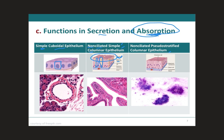Last, we have the non-ciliated pseudostratified columnar epithelium. It appears to have several cell layers because the nuclei of these cells are at various levels. Even though all the cells are attached to the basement membrane in a single layer, some cells do not extend to the apical surface, giving a false impression of a multi-layered tissue. Remember that pseudostratified means false stratified, so it contains only one cell layer. The non-ciliated type lines the epididymis, large ducts of many glands such as the parotid glands, and parts of the male urethra, and it functions for absorption and secretion.